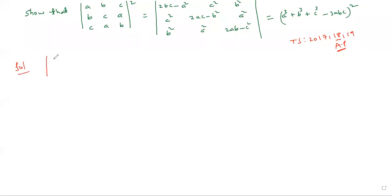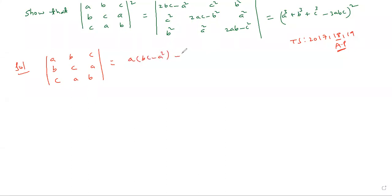First part: take determinant of [a, b, c; b, c, a; c, a, b]. Expand this as it is — expanding a into (bc minus a squared), minus b of (b squared minus ac), plus c of (ab minus c squared).